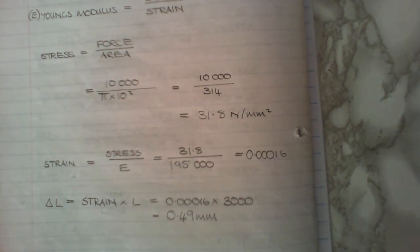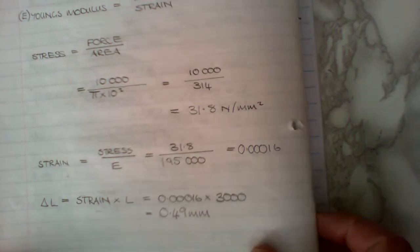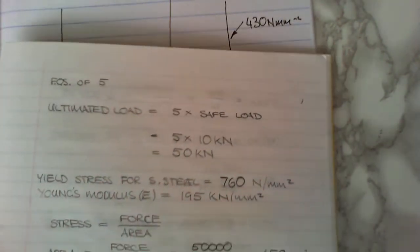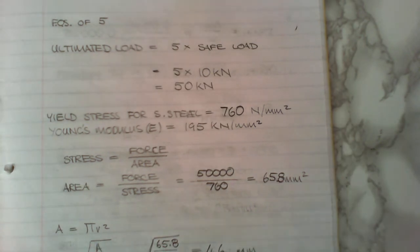Now remember that there is a range of answers that they're looking for. So it doesn't matter if you've got something slightly different from someone else. Remember Young's is 190 to 200. Oh, and remember the kilo, remember putting the three zeros.